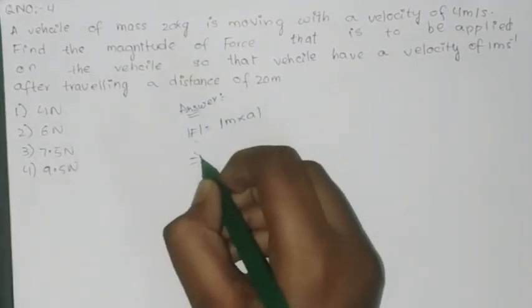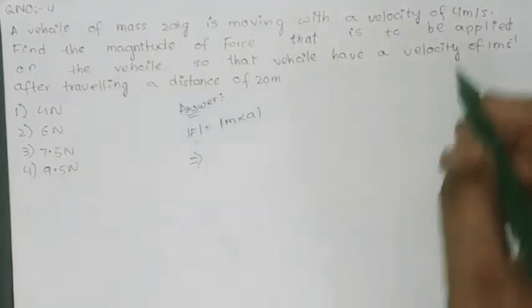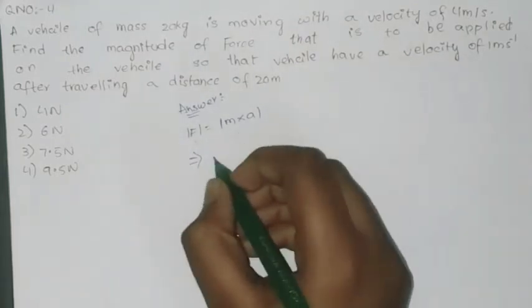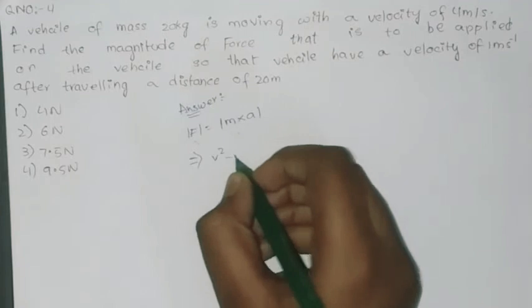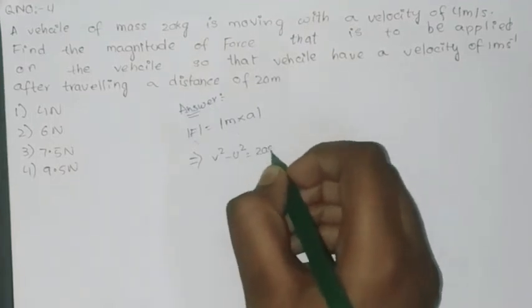Then first we will find the acceleration. Here in the given data there is no acceleration given. Then we will write the relation v² - u² = 2as.